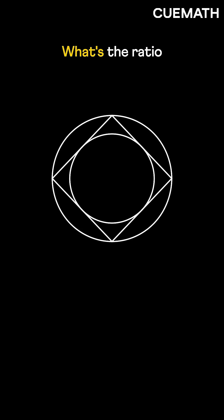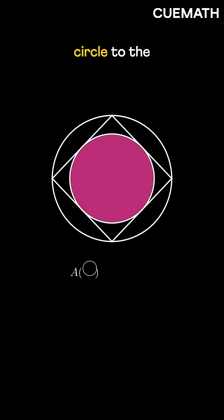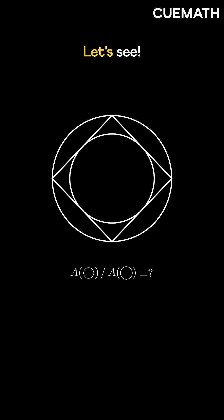Here's a square between two circles. What's the ratio of the area of the smaller circle to the larger circle? Let's see.